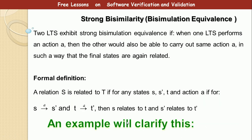Let's now look at strong bisimulation equivalence, also called strong dissimulation equivalence. Two LTS exhibit strong bisimulation equivalence if when one LTS performs an action a, then the other will also be able to carry out the same action a in such a way that the final states are again related. Formally: we have state s and state t in another transition system. If we can move from s to s' through action a, then for t we can move from t to t' through a, such that s relates to t and s' relates to t'.